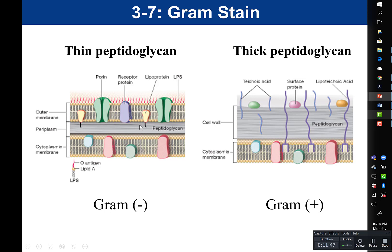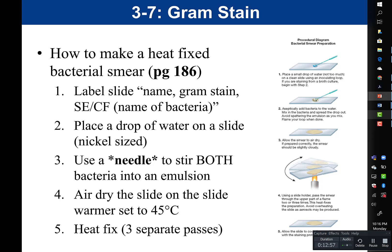Know why gram-positive stain differently than gram-negative. Gram-positive bacteria retain the purple crystal violet because they have a thick layer of peptidoglycan, which holds in the dye. Gram-negative bacteria have a thin layer of peptidoglycan, an outer membrane with LPS (lipopolysaccharide) containing lipid A (an endotoxin), and porins. When decolorized with the acetone-alcohol solution, the crystal violet comes out of gram-negative cells due to their thin peptidoglycan, which is why a counterstain (safranin) is needed.